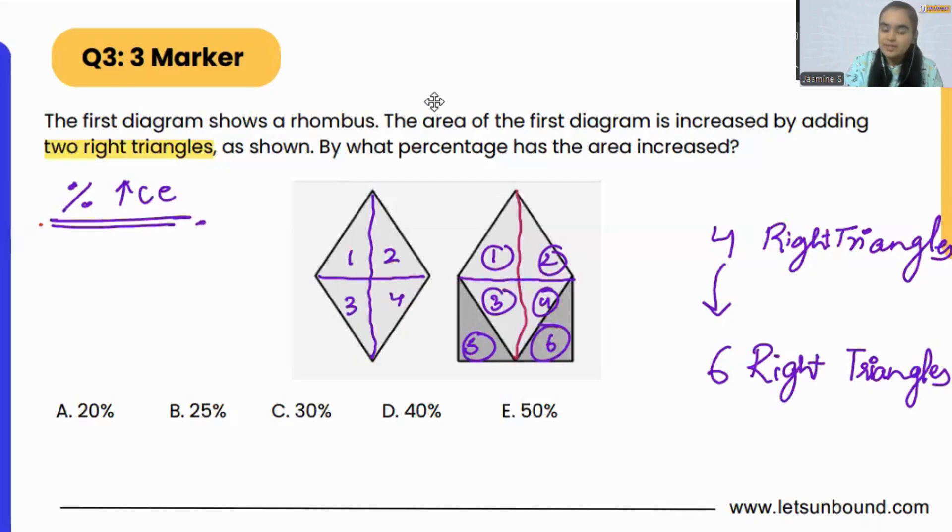Initially there were four right triangles and now it has been increased to six right triangles. Now how to find out percent increase? To find out percent increase, firstly we have to find out the change. The change is from four to six, that means we are adding two triangles, or in the other way, six minus four is two triangles.